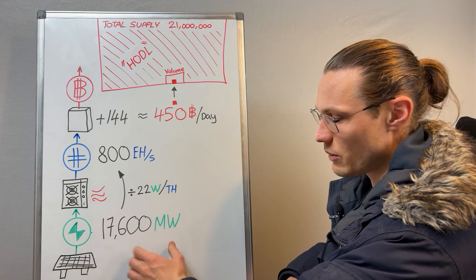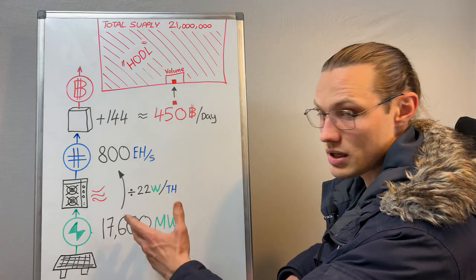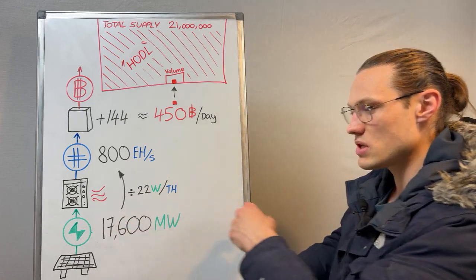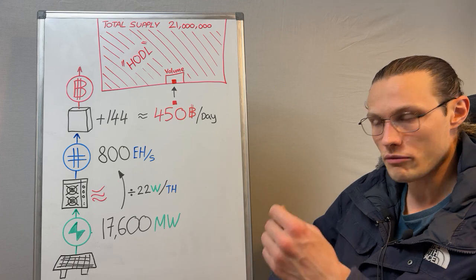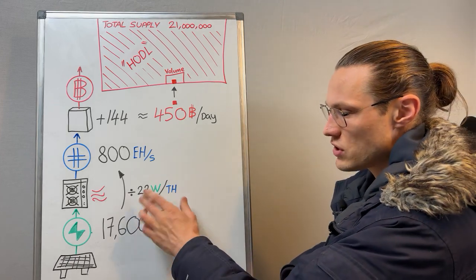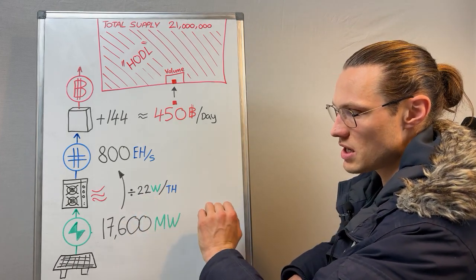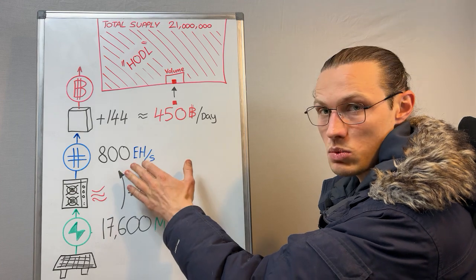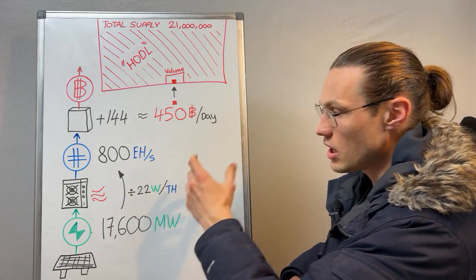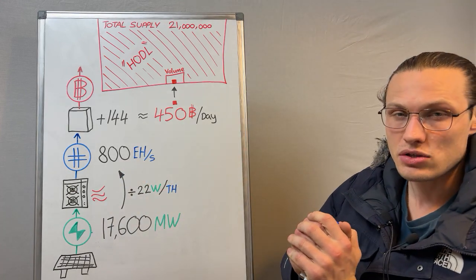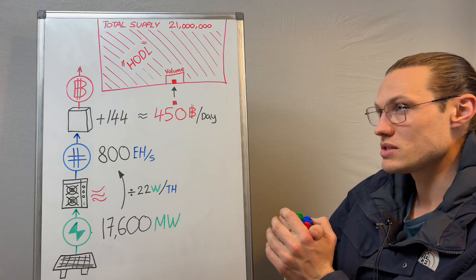And this is to say that the Bitcoin network right now is consuming and monetizing about 17.6 gigawatts of power at a conversion rate of about 22 watts per tera hash. That's producing the network hash rate of the blockchain of 800 exahash or 800 million tera hash.